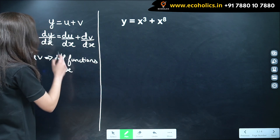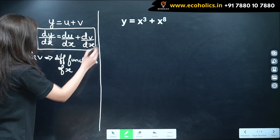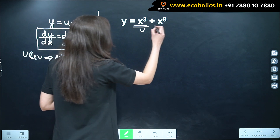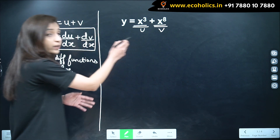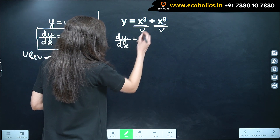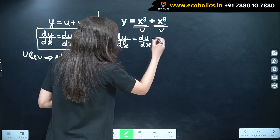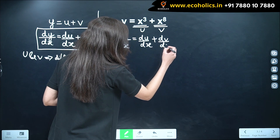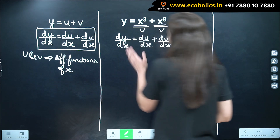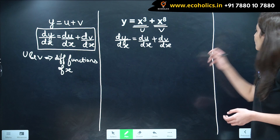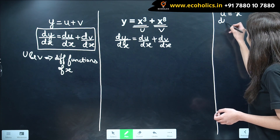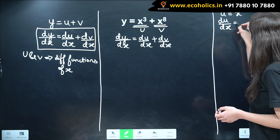Using this addition rule of differentiation, we'll solve this. We can consider x cubed as u and x raised to 8 as v. So dy by dx is equal to du by dx plus dv by dx. Our u is x cubed, so we need to find du by dx.